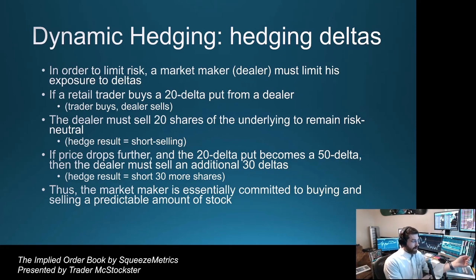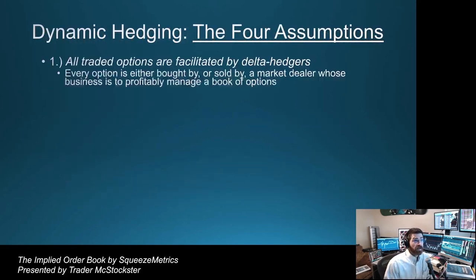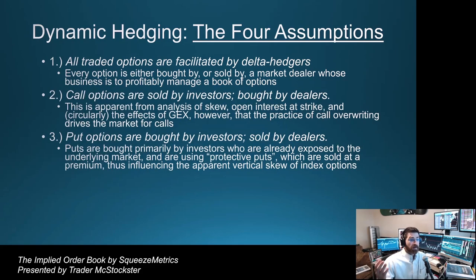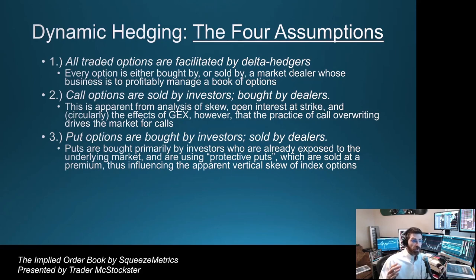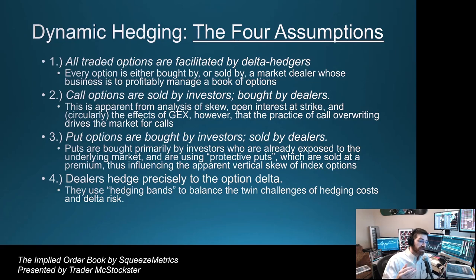To come up with all this, they put in four assumptions for the data in this paper. Basically: all options you buy or sell are facilitated by delta hedgers or market makers; traders or investors predominantly sell calls or buy puts; when you sell a call, the dealer is buying it from you, and when you buy a put for protection, they're selling it to you; and finally, they're going to hedge as price moves, precisely, using hedging bands to balance the twin challenges of hedging costs with delta risk.